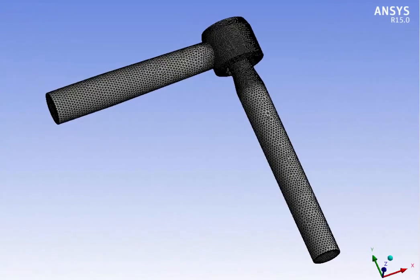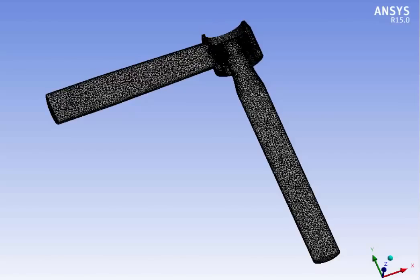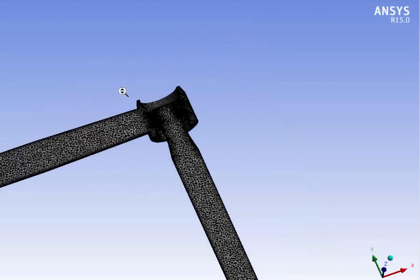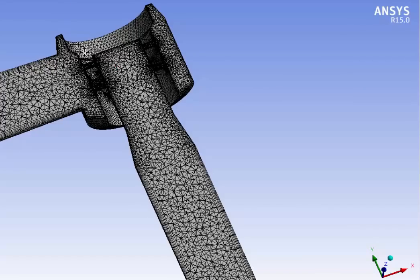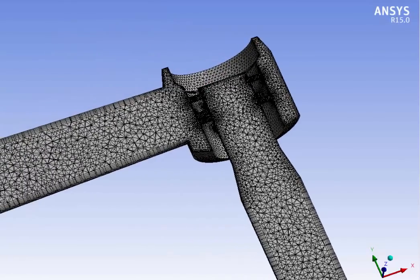Now let's look at the mesh. Here you can see the surface mesh—really high quality prism and tetrahedral mesh. Let's look at the inside of the mesh. I'm going to zoom in a little bit.